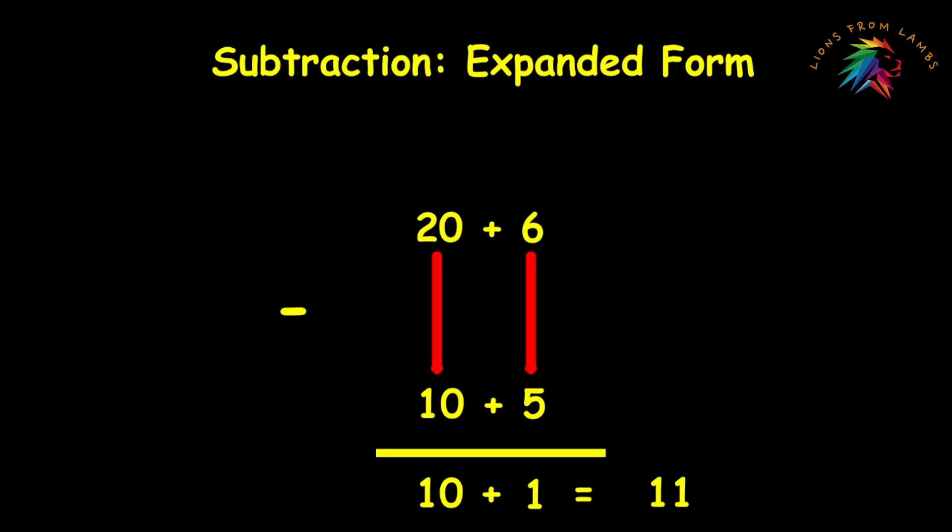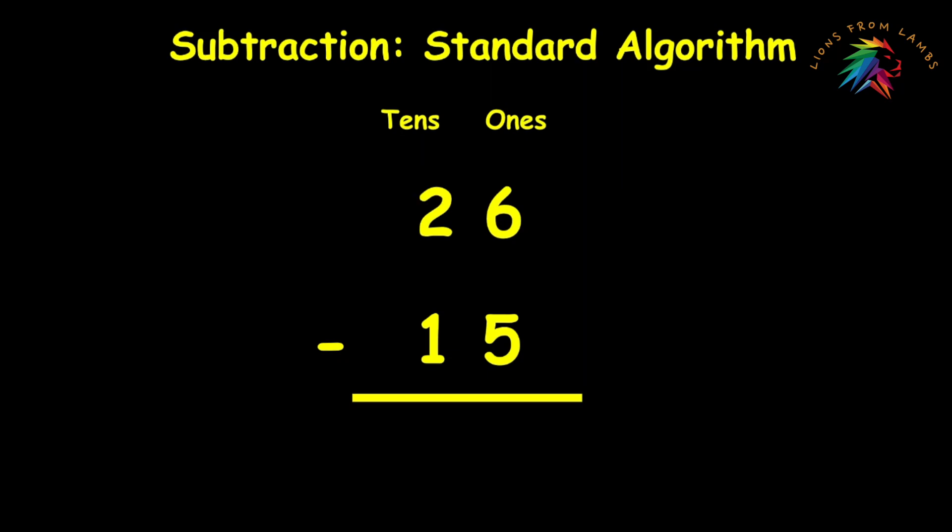For right now, let's go ahead and get to the standard algorithm for subtraction. This is how we want our kids to solve subtraction problems moving forward. Once they get the concepts down, this is the gold standard in solving subtraction problems. We'll go ahead and put our frame up to keep track of our place values, keep them lined up. Not necessary if the kids don't need it, but this can be helpful when they're first starting out working with two-digit numbers. Again, we're going to do the top number minus the bottom number. We're going to start in the ones place.